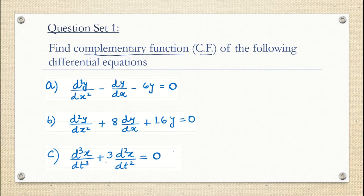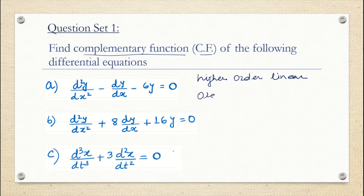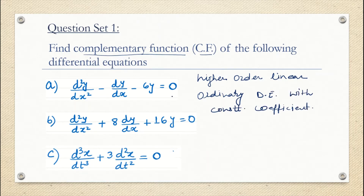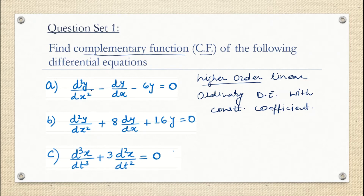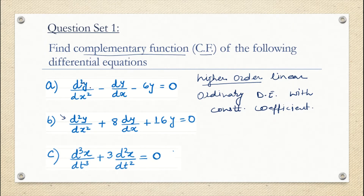These equations which I have written down are higher order linear ordinary differential equations with constant coefficients. These all three equations are higher order differential equations. Higher order means the order is more than 1 — it could be 2, 3, 4, or anything. Last class we had seen how to find the order and degree of a differential equation. This differential equation is of order 2 because the highest order derivative is 2. And here this one is order 3.